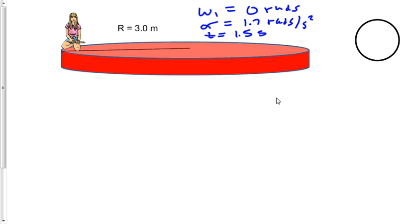Now we can solve for quite a few things, but let's find omega 2, and then when we're done, let's figure out the total acceleration occurring for this girl.